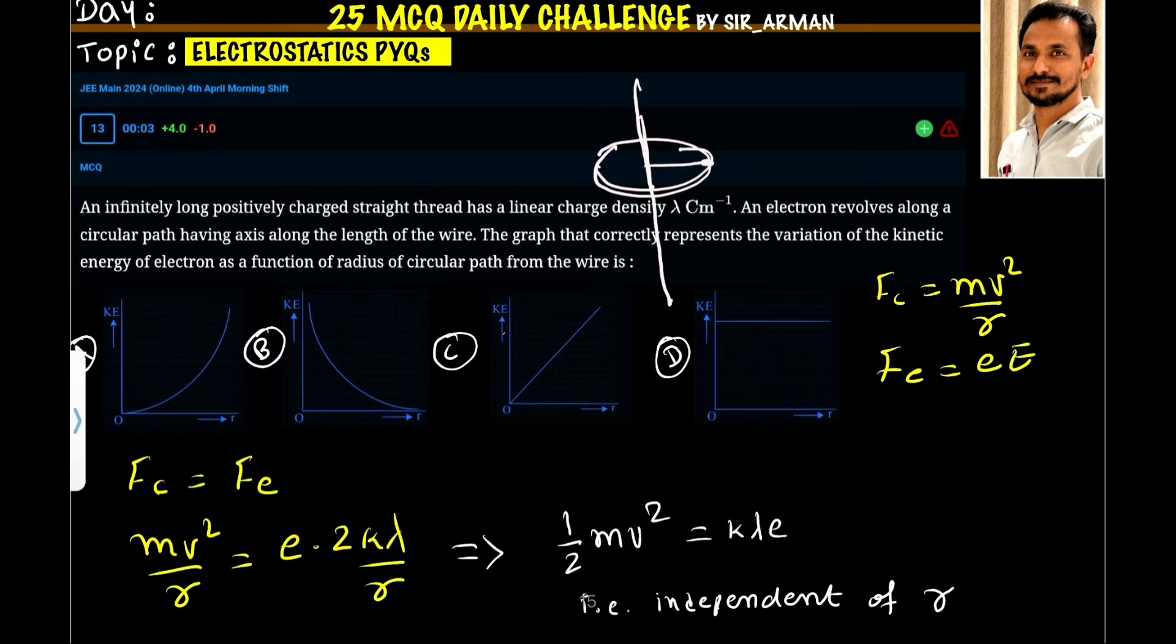The general equation for the centripetal force is mv square by r. And here the electric force acting on the electron due to the electric field of the wire is f equals to q into e, where e is the electric field and q is the charge of the electron. Now electric field due to a wire is e equals to 2k lambda by r.